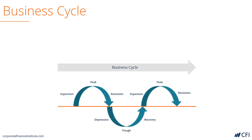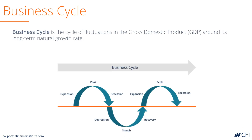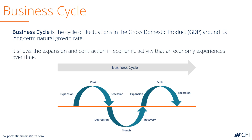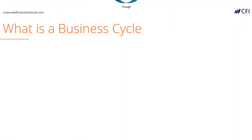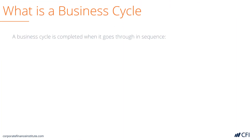The business cycle, or economic cycle, is the fluctuations of gross domestic product around its natural growth rate. It includes both expansion and contraction in economic activity. Let's take a closer look at what a business cycle really is.